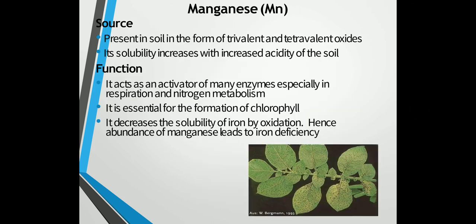The next important micronutrient is manganese. Like iron, manganese is found in the soil in the form of its oxides, namely the oxidized form manganese dioxide. It is usually present in the form of trivalent and tetravalent oxides. Its solubility increases with increased acidity and in strongly acid soils it is frequently present in toxic concentrations. It may be one of the chief causes of crop failure due to soil acidity.